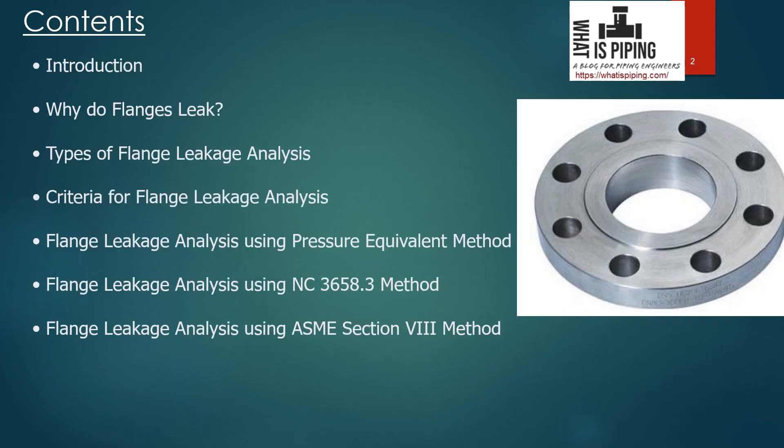In this course we will cover: first, a brief introduction; then why flanges leak and the possible reasons flange leakage happens at site; then the types of flange leakage analysis methods available in Caesar 2; then the criteria for flange leakage analysis. We will also cover three case studies: using the pressure equivalent method, the NC3658.3 method, and the ASME Section 8 method, all using a practical problem in Caesar 2 software.